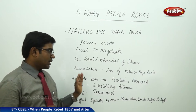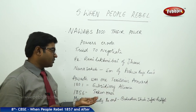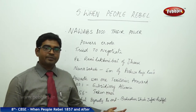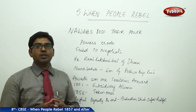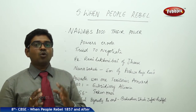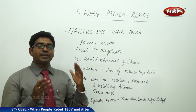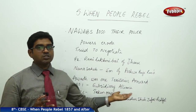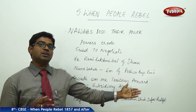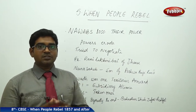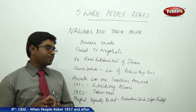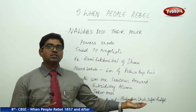In 1801, Awadh was brought under subsidiary alliance, and then in 1856 it was completely taken over. The Mughal dynasty came to an end with Bahadur Shah Zafar as the last ruler. The Britishers targeted the Mughals, wanting the eradication of the Mughal Emperor. After Bahadur Shah Zafar, all his sons would be called only princes — no more emperors. The Mughal rule would come to an end with Bahadur Shah Zafar's regime.